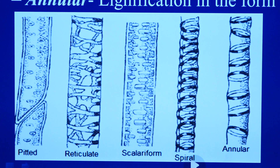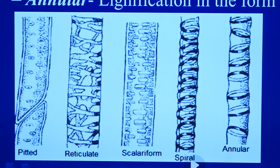So the same classification applies to both tracheids and trachea — on the basis of lignification, we can categorize them. These two — tracheids and trachea — mainly help in the conduction of water and minerals in the xylem.